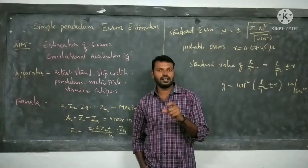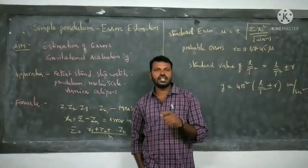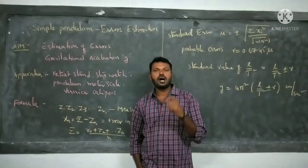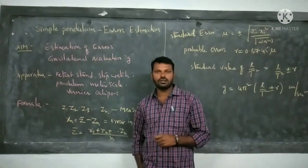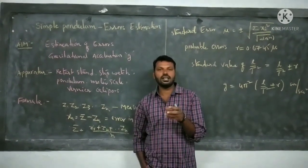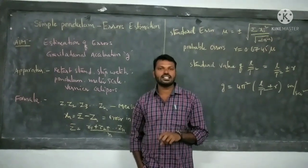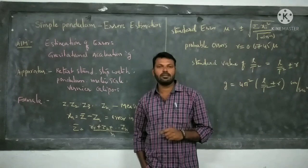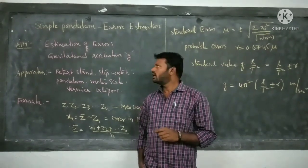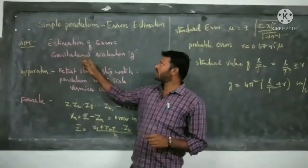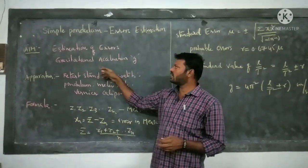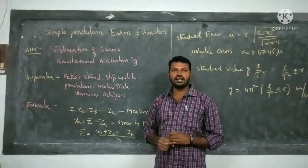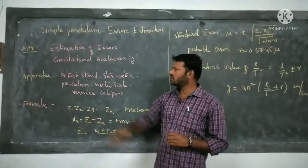In this Simple Pendulum experiment, we will look at what kinds of errors arise: standard error, probable error, and how to draw the Gaussian distribution curve. From that, we will estimate the accurate gravitational acceleration G value. The aim of the experiment is estimation of errors and calibration of acceleration due to gravity — first estimate the errors, then find out the G value.